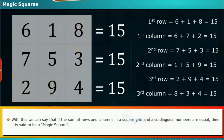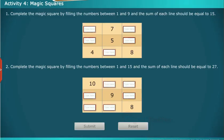With this, we can say that if the sum of two rows and columns in a square grid and also diagonal numbers are equal, then it is said to be a magic square. Let us perform an activity on magic squares.